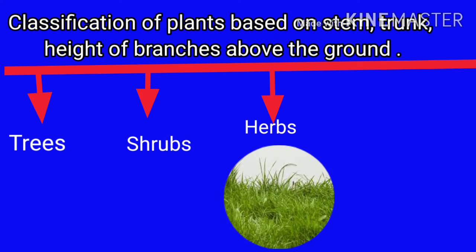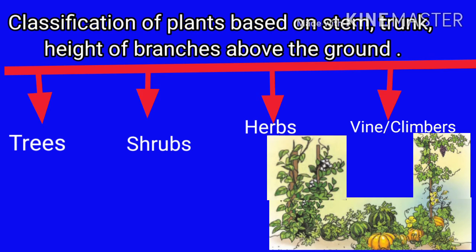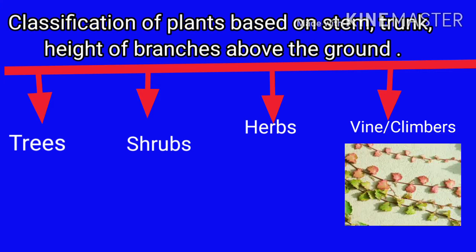Herbs grow 1 to 1.5 meters tall. The stems of herbs are green and quite flexible compared to those of trees and bushes. Herbs may live for a few months or up to 2 years. Some vines need vertical support for growing while others spread on the ground. Climbers like the money plant have aerial roots. Cucumber tendrils that look like a spring help the plant cling to support. The stem of a creeper is very flexible, soft, and green, and grows rapidly with the help of a support.